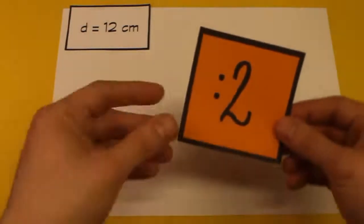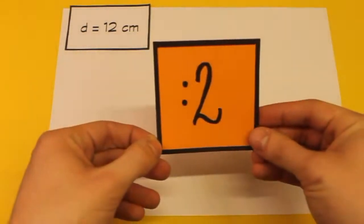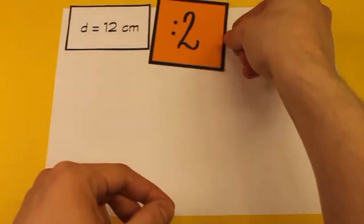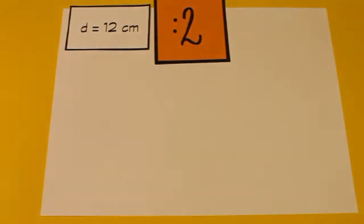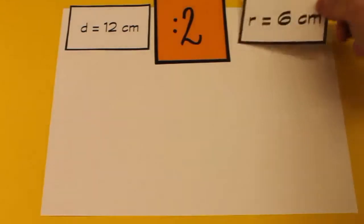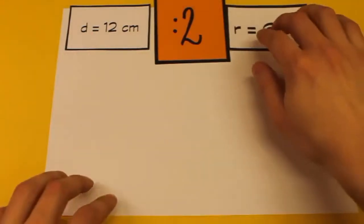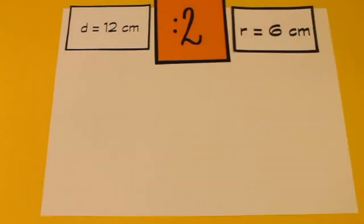Das Ganze ist jetzt aber kein Problem, denn wie ihr wahrscheinlich schon wisst, das hoffe ich mal, von den Videos zuvor, ist der Durchmesser ja nichts anderes als der doppelte Radius. Dividieren wir den Durchmesser durch 2, erhalten wir den Radius. Also 12 dividiert durch 2 ergibt 6. Der Radius ist also 6 cm lang.